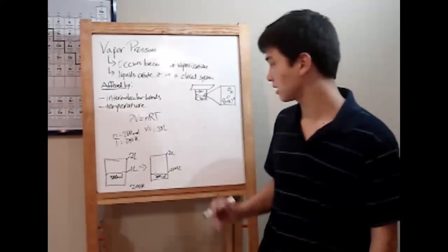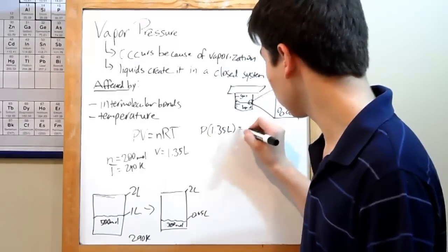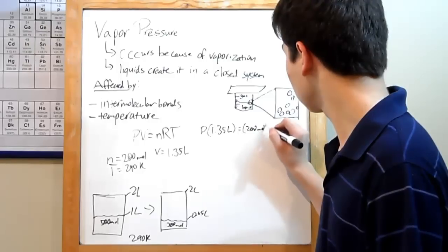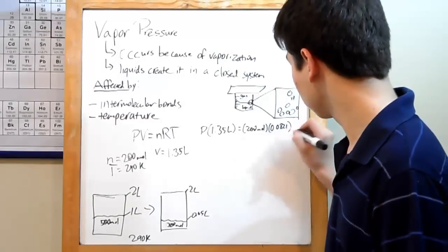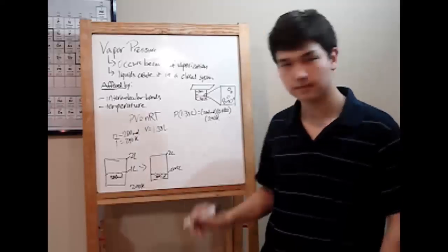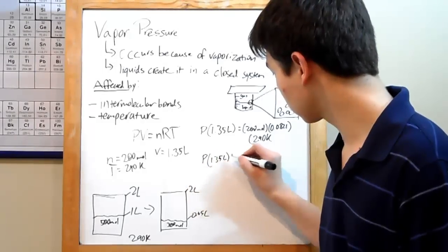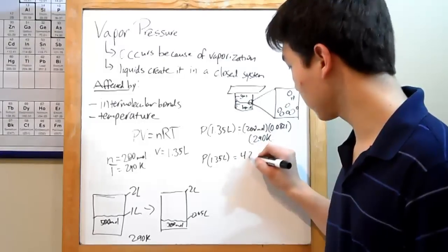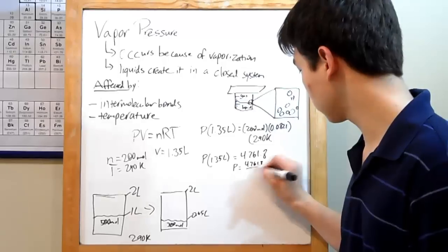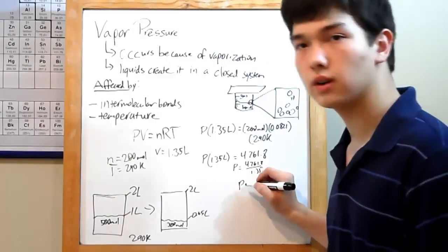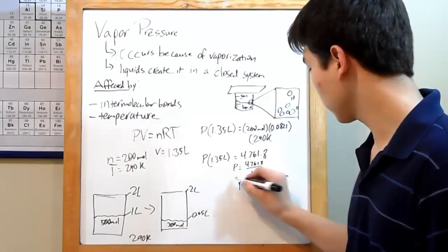We've got all our variables. Time to plug in. P times the volume of 1.35 liters equals 200 moles. R is 0.0821. And lastly, our temperature, just move that down here, 290 kelvins. Simplify. Multiply on this side first. P times 1.35 liters is equal to 4761.8. So then P is that number divided by 1.35, or just about 3,527 atmospheres. And that is your vapor pressure.